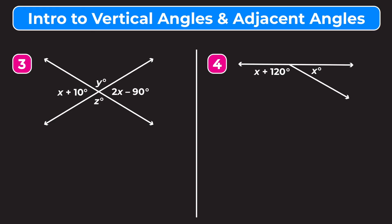The next two examples are trickier because the angles are expressed with multi-term expressions. In example three, let's identify relationships between all the angles. Angle y equals angle z because they are vertical angles, but since we don't know either value that doesn't help yet. However, the angle measuring x plus 10 is congruent to the angle measuring 2x minus 90 because those are also vertical angles, giving us an equation with only x's that we can solve.